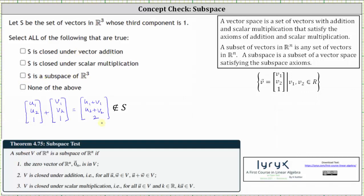But let's also check to see if S is closed under scalar multiplication. Let A be the scalar, so we have A times any vector in subset S. Let's use the vector with components U sub one, U sub two, one.